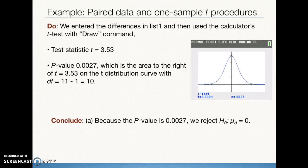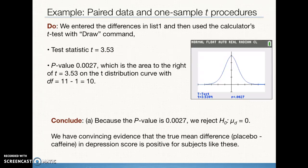So that leads us to the conclude part, where we compare our alpha and our p-value. In this case, our p-value is smaller than our alpha that we selected of 0.05, so we reject the null hypothesis saying that the difference is zero. We have convincing evidence that the true mean difference, placebo minus caffeine, in depression score is positive for subjects like these. This is really good evidence of why I need my morning cup of tea.